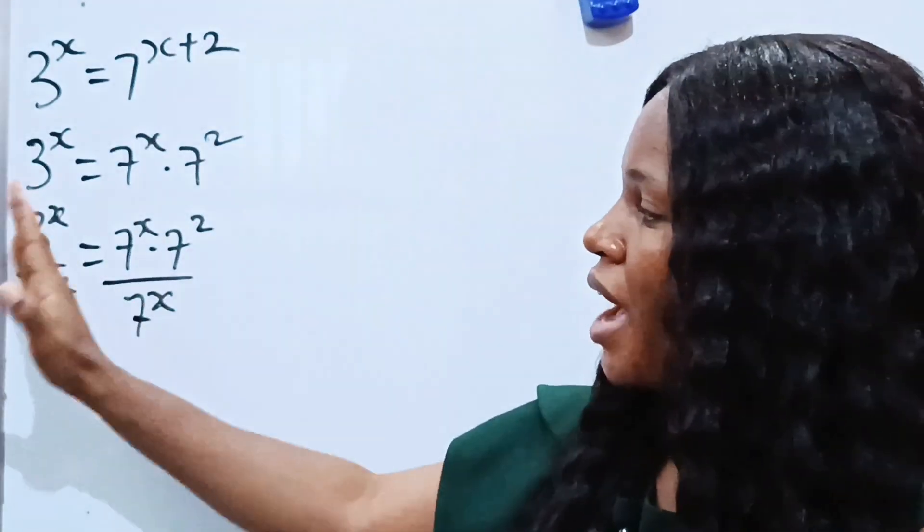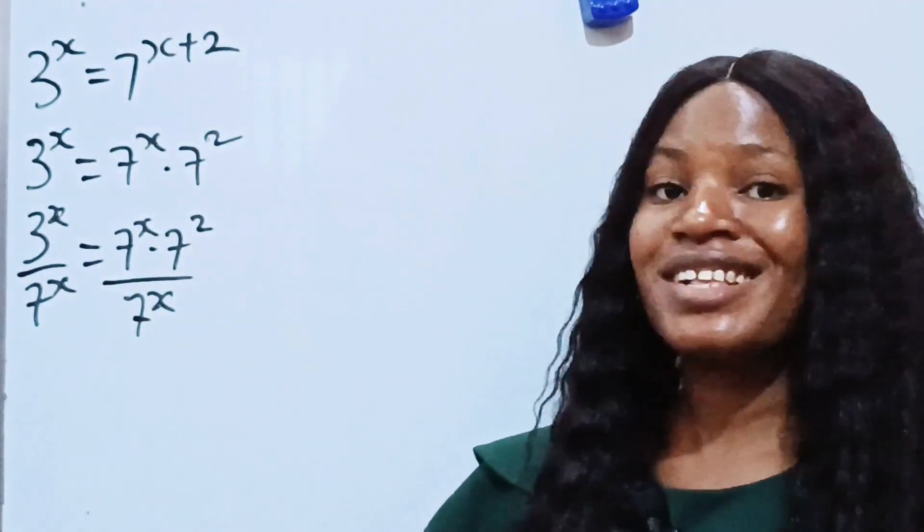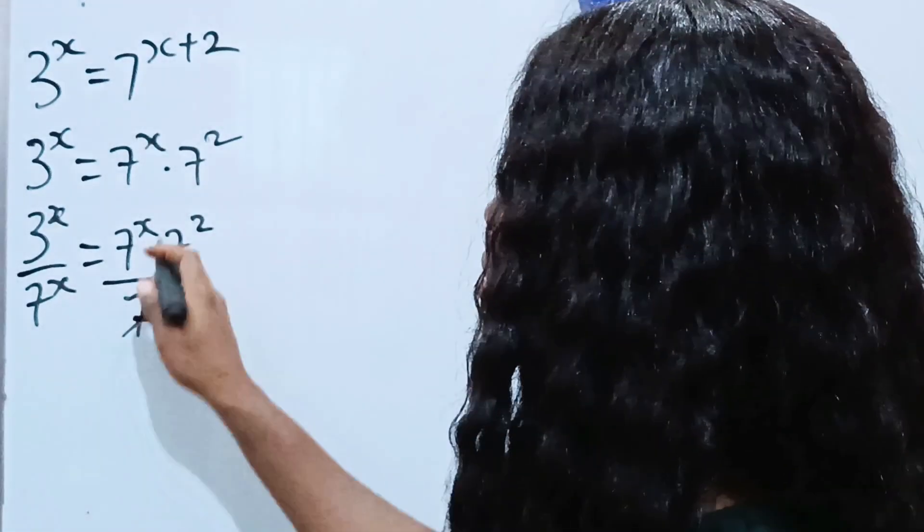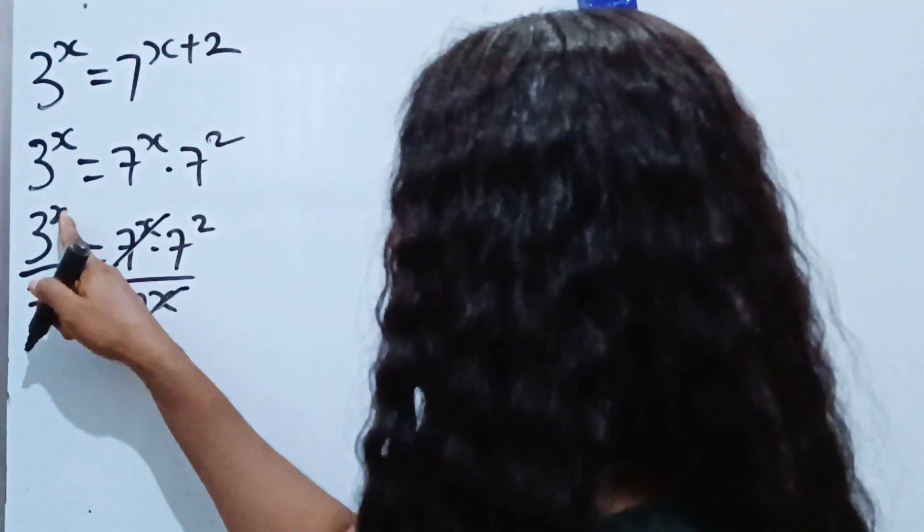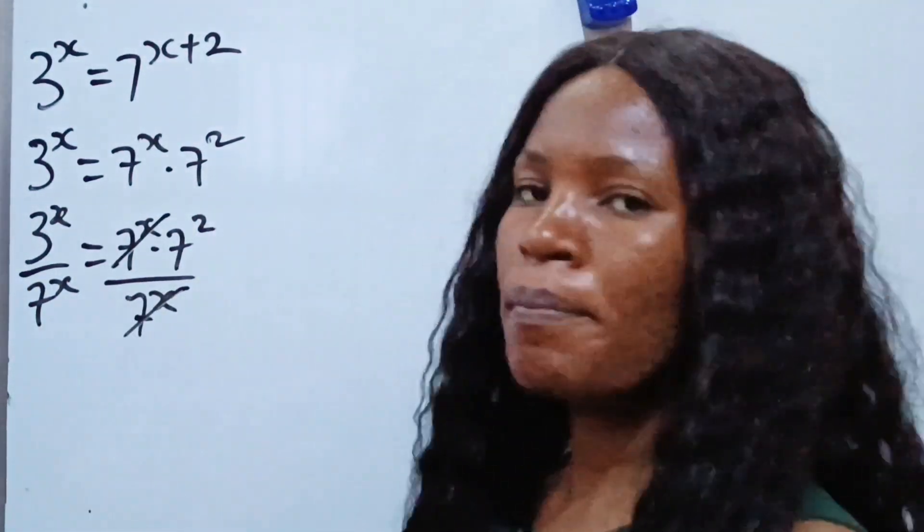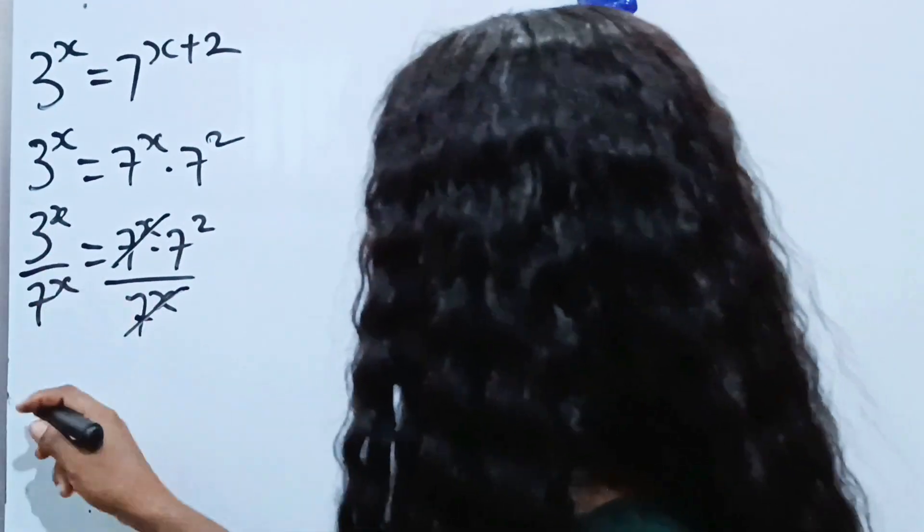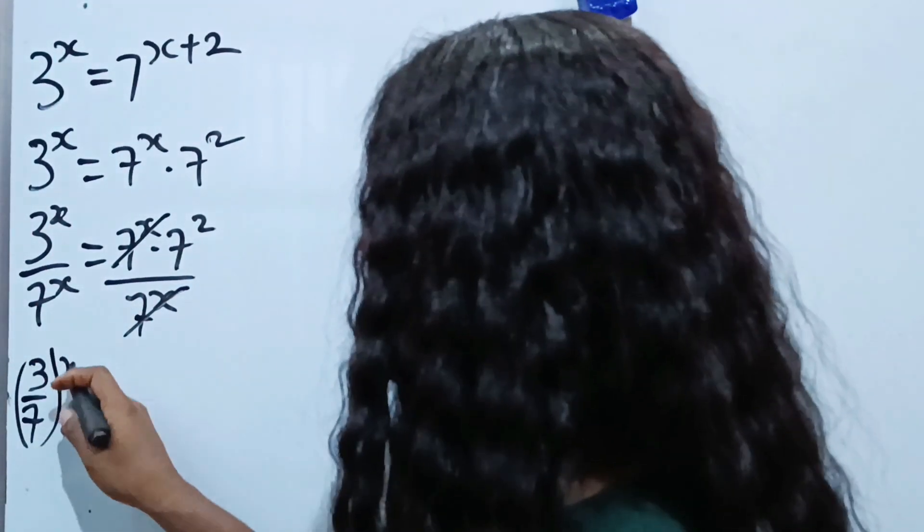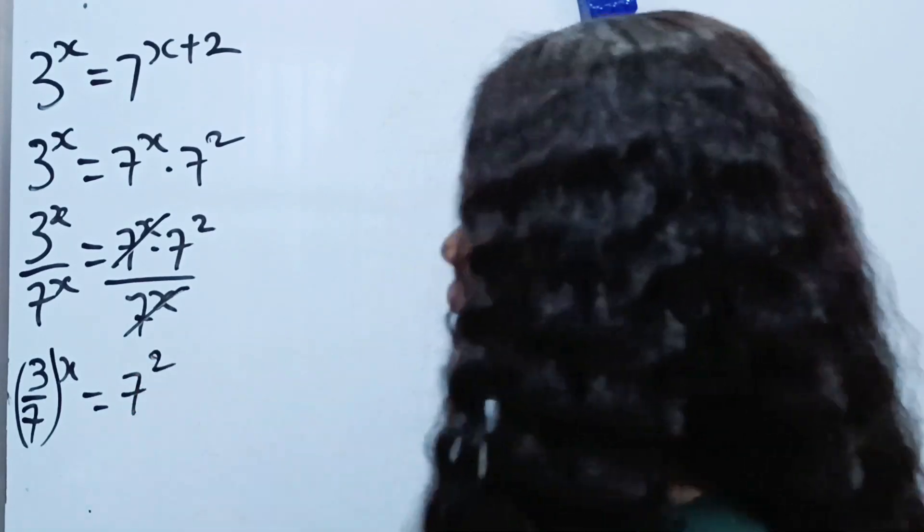I'm doing that because I want to bring everything with x on one side so that I can easily find my x. So this is going to divide this. So when you have the same power on a base, you can actually bring this and this together. So we can write 3 over 7 raised to the power of x equals 7 squared.